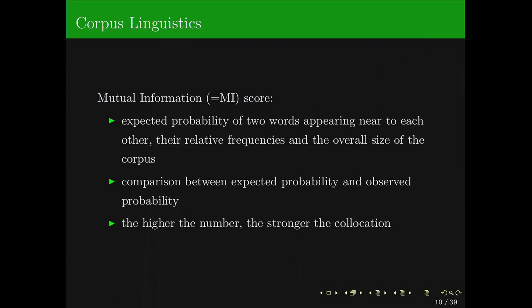To give an example, the two strongest collocations in the British National Corpus for "juice" are "orange" and "lemon." In order to indicate the strength of a collocation, mutual information is used. It's calculated based on the expected probability of two words appearing near each other, their relative frequencies, and the overall size of the corpus. You compare the expected probability and the observed probability, and this difference is translated into a number — the higher the number, the stronger the collocation. But if you use a corpus analysis program, all this is done for you.